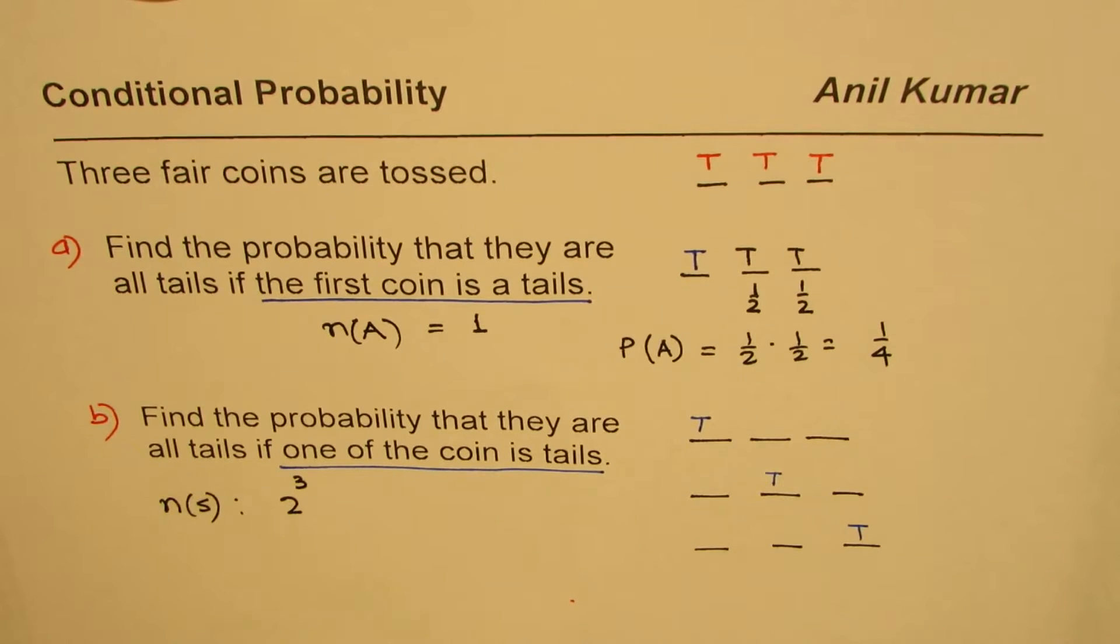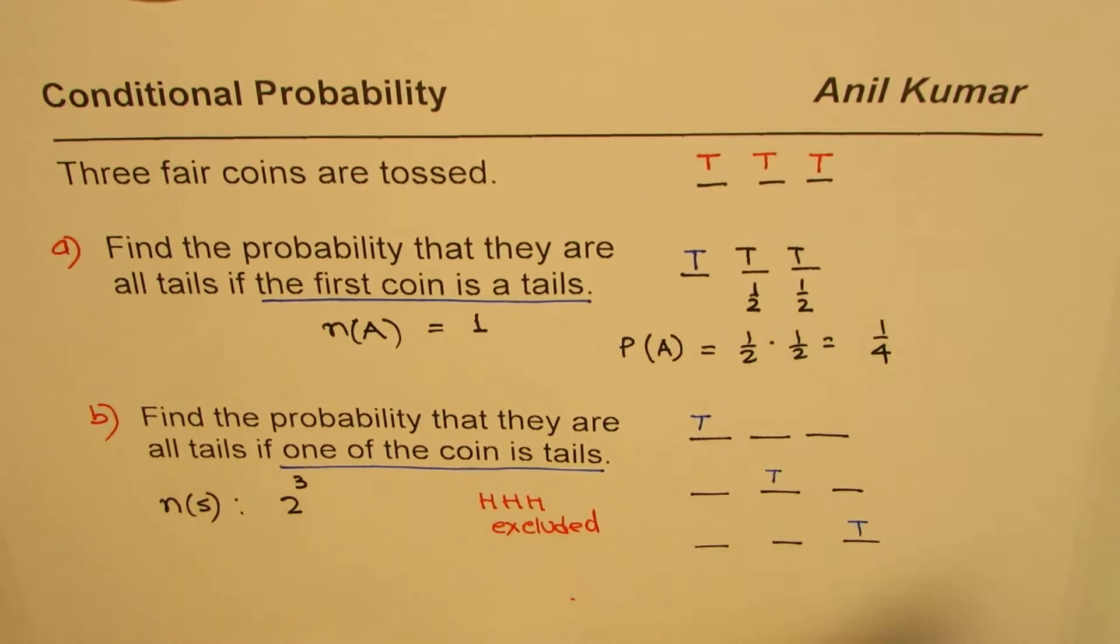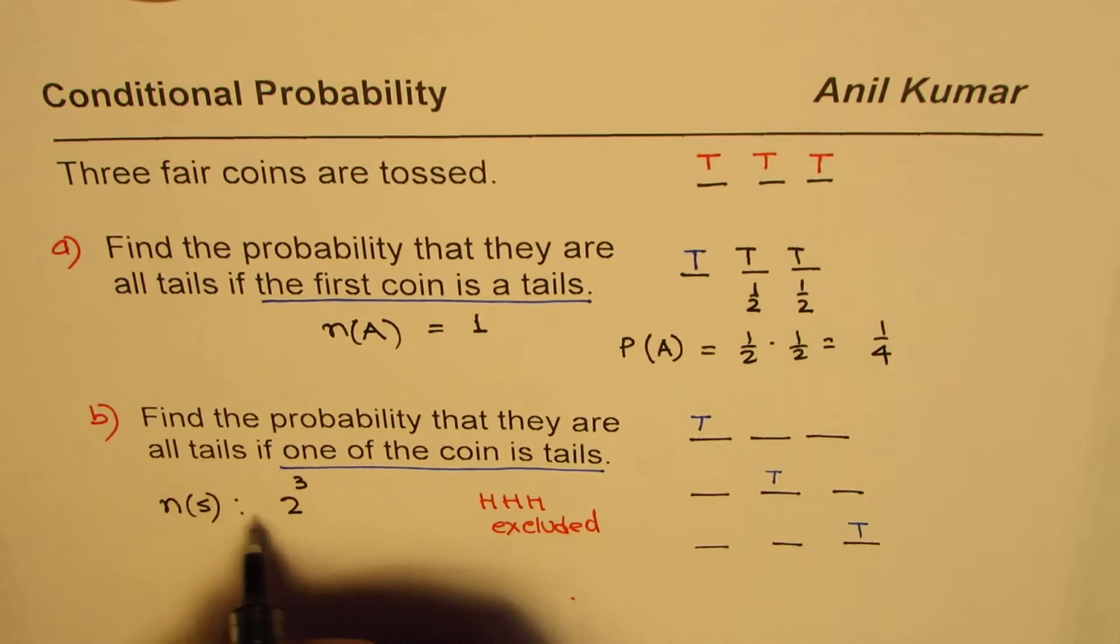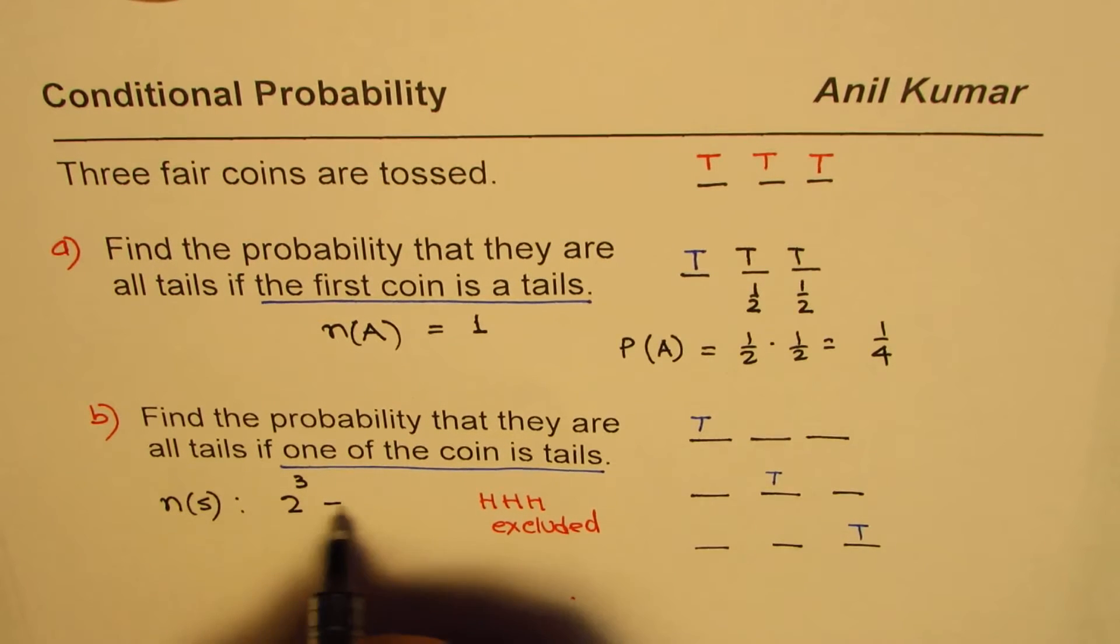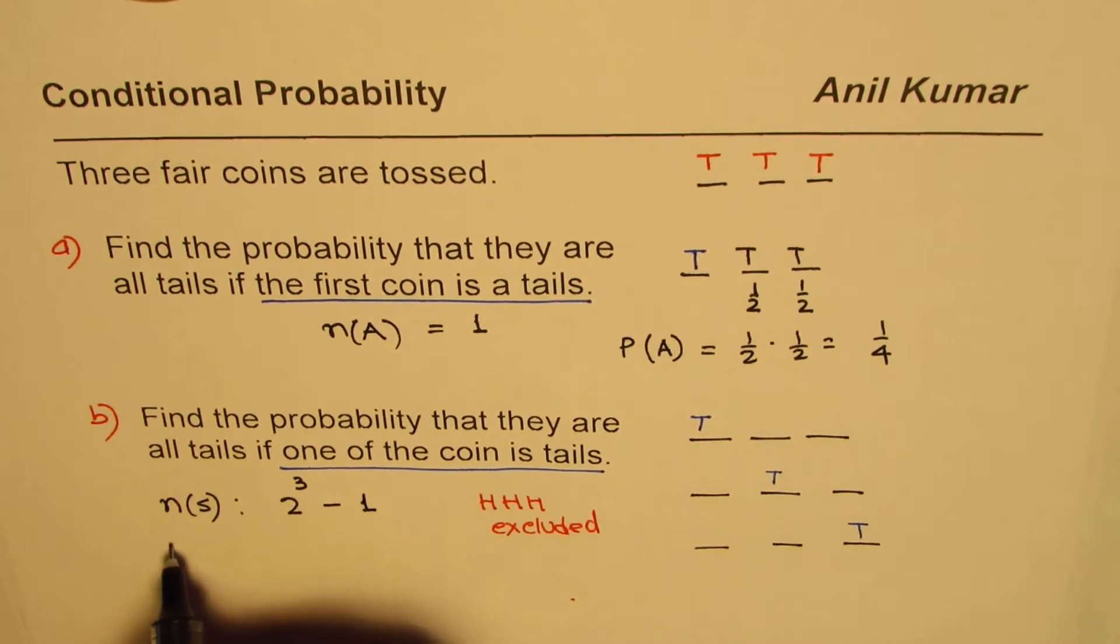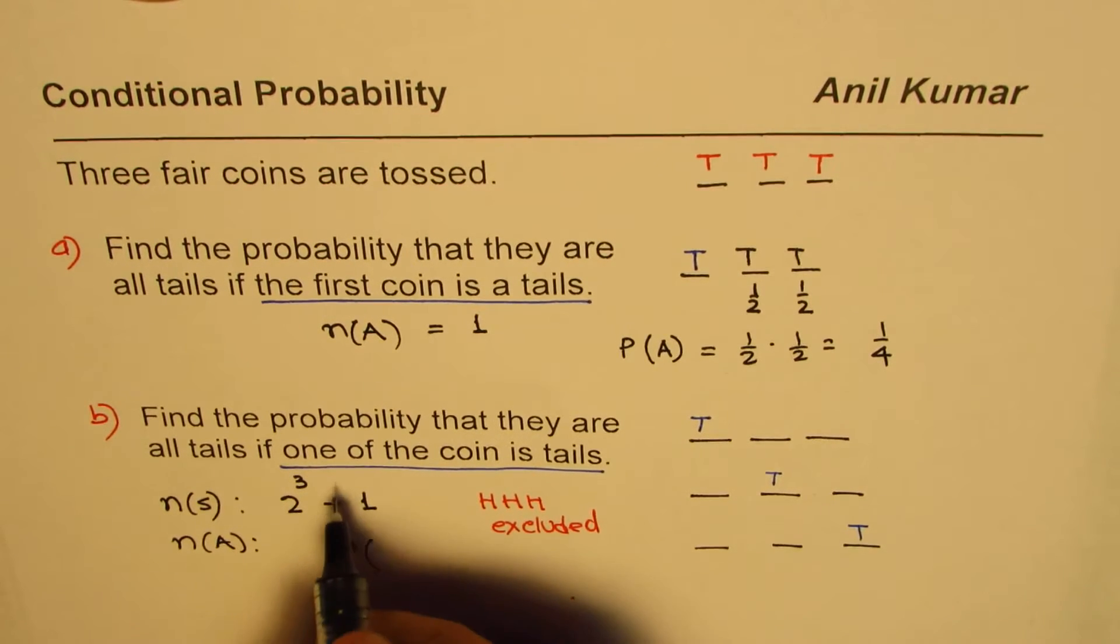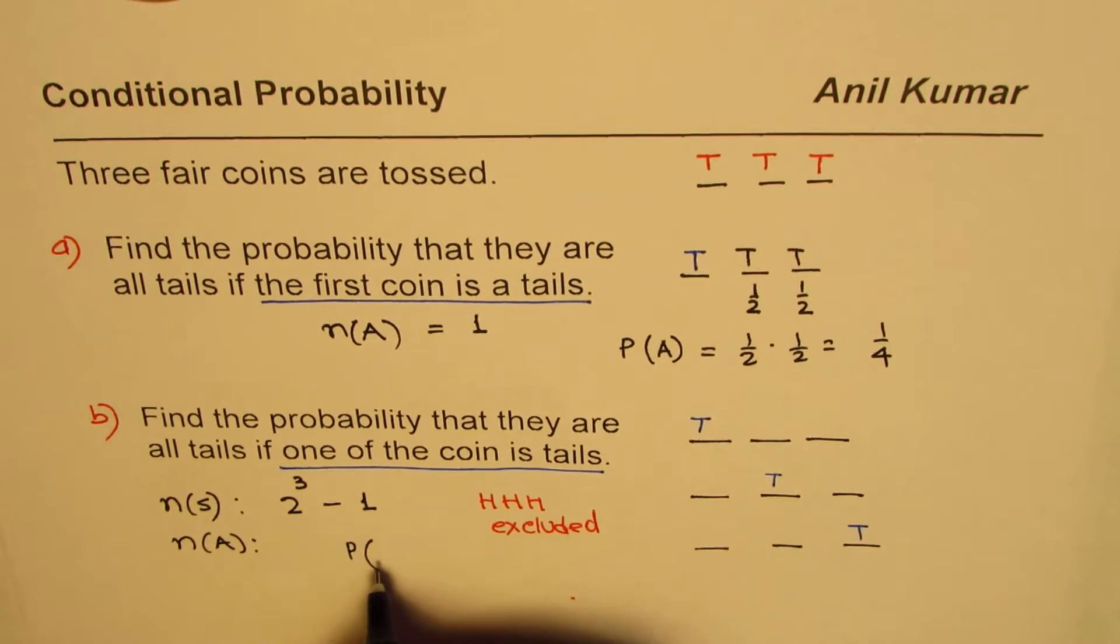But since one of them is a tail, that means that the option which is like all heads should be excluded. Therefore we have total number of options in our sample space as two to the power of three minus one, and getting all three tails is possible only once.